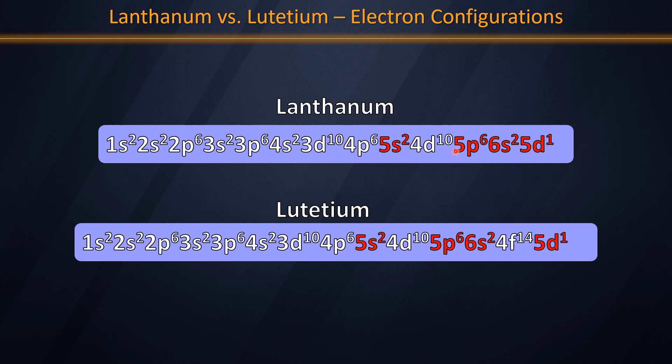They also share the same interior configuration as far as their fifth principal energy level is concerned: 5s2, 5p6, 5d1 for lanthanum, and likewise 5s2, 5p6, 5d1 for lutetium. In fact, they only differ substantially by the filling of the 4f subshell in lutetium. The entire series between lanthanum and lutetium represents elements in which the 4f subshell is the one being populated by the additional electrons necessary to compensate for the increased nuclear charge of each element.